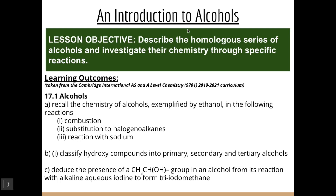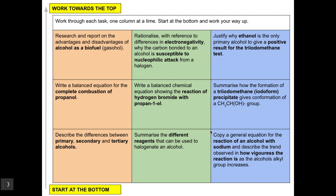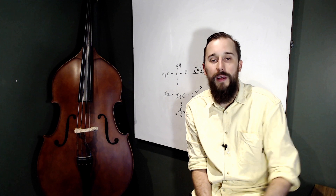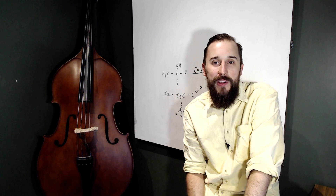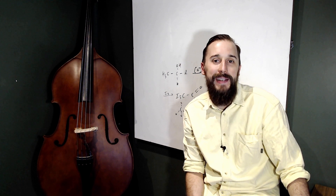To summarise this lesson, we recalled the chemistry of alcohols as exemplified by ethanol in combustion, substitution to haloalkanes, and reaction with sodium. We classified hydroxy compounds into primary, secondary, or tertiary alcohols. And we deduced the presence of the CH3CHOH group in an alcohol from its reaction with alkaline aqueous iodine to form triiodomethane. Pause and consolidate by working through the tasks top to bottom. Thank you very much — I'll see you next time when we conclude the hydroxy compounds. Have a great day.